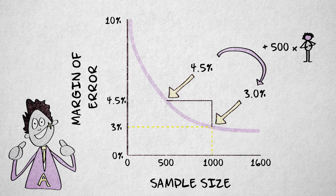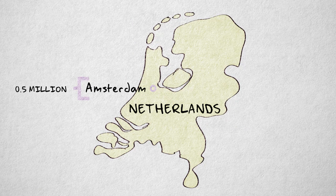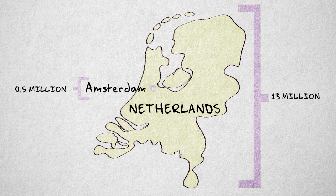Note that it's the absolute size of the sample that matters, not the relative size. It doesn't matter if we're estimating election results in Amsterdam, with slightly more than half a million eligible voters, or national elections, with more than 13 million voters.